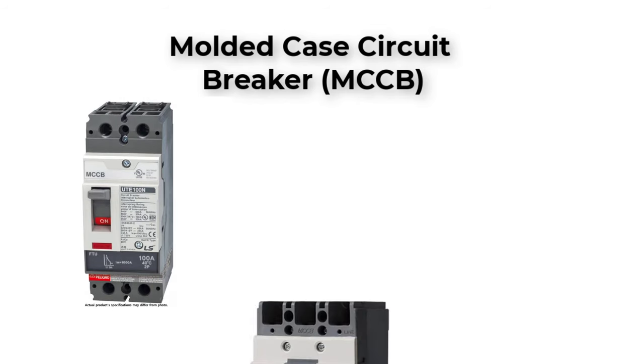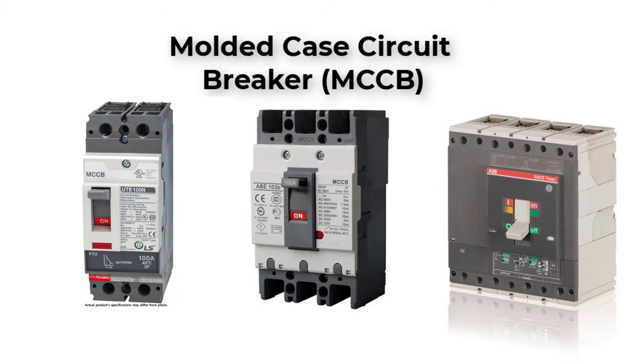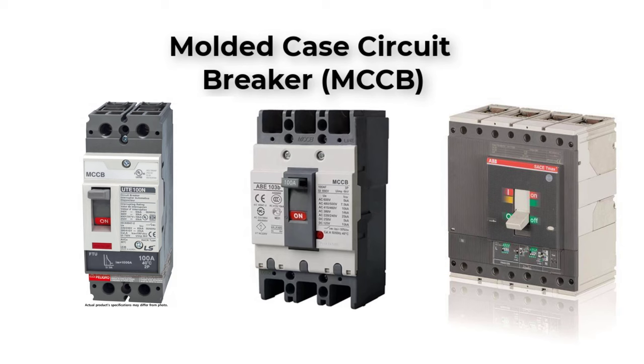Molded Case Circuit Breaker can be 2-pole, 3-pole, or 4-pole configuration with current ratings that can vary from 10A to 1600A. It's recommended to use MCCB up to 800A. More than this current rating, it's recommended to use Air Circuit Breaker.